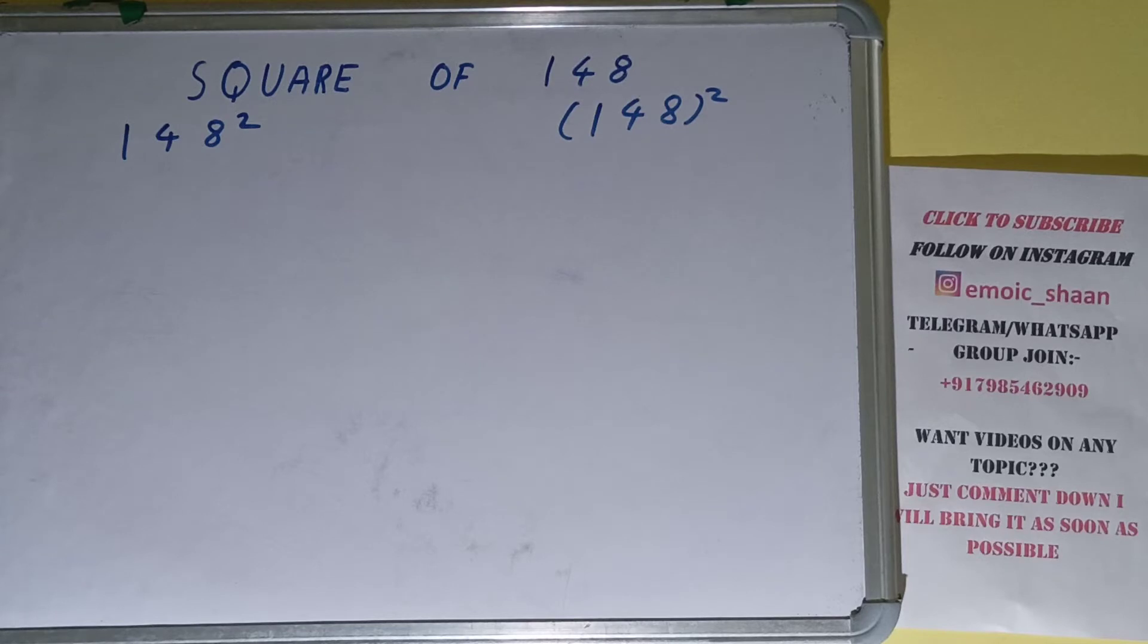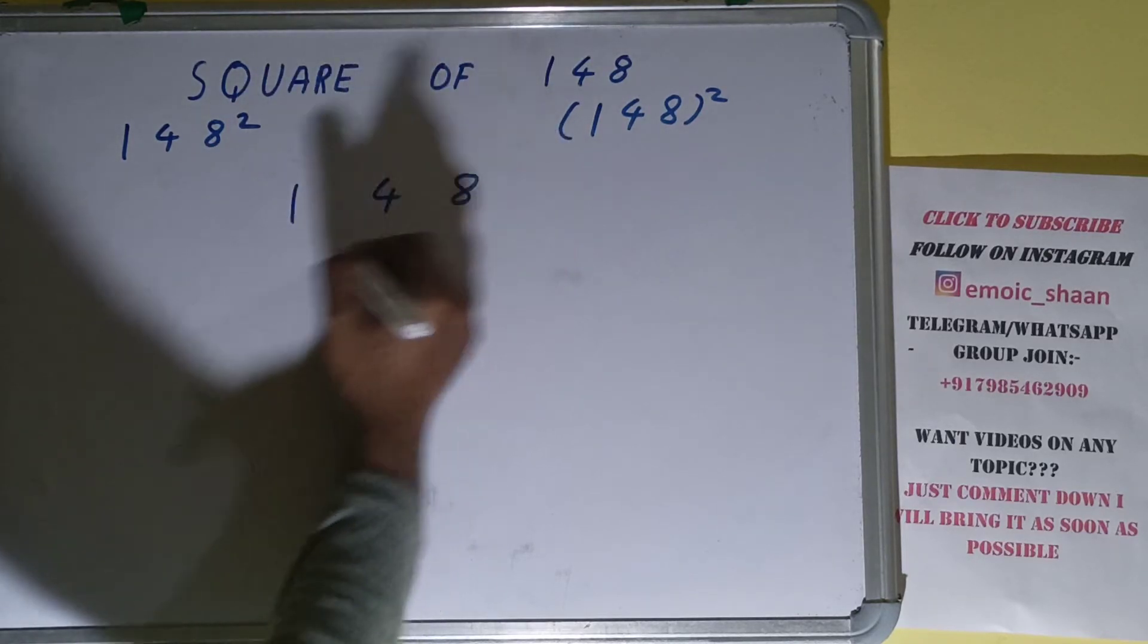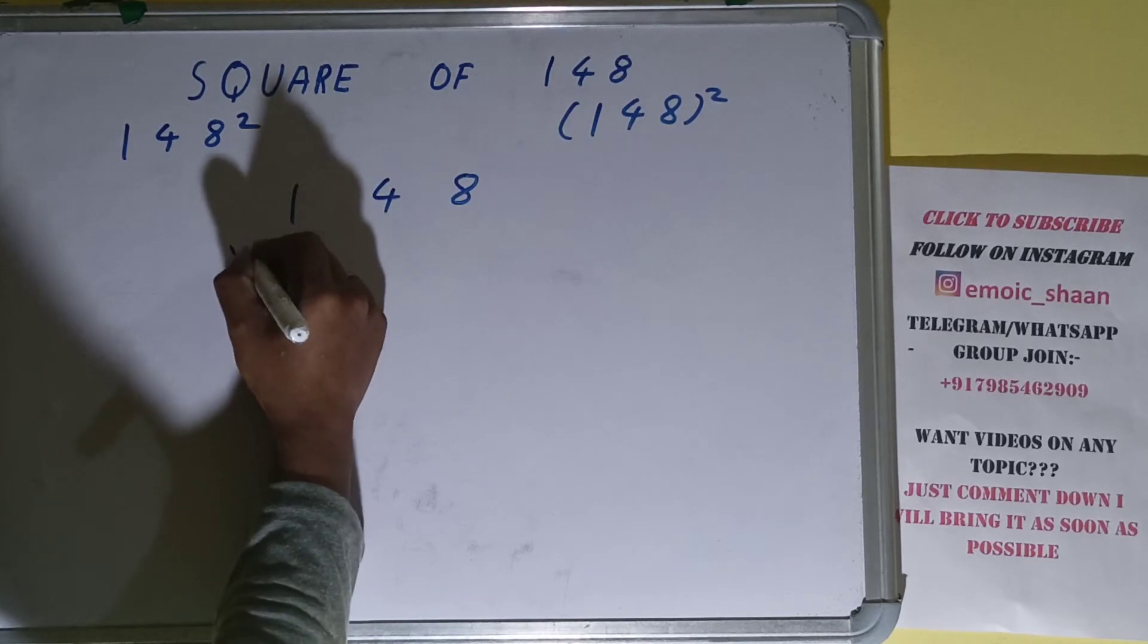We need to find the square of 148. Now moving on to the solution, square basically means multiplying the number by itself. So the number here is 148, and to find the square of it we need to multiply it by itself, that is 148, and do the normal multiplication.